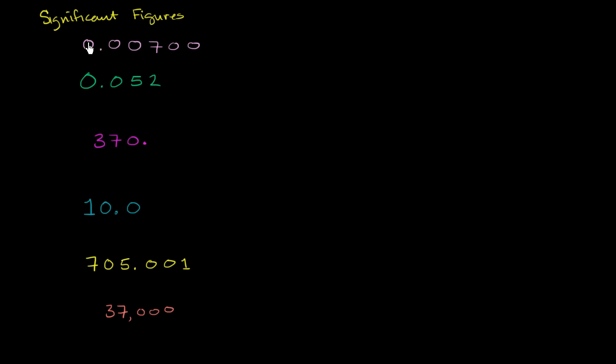The result isn't more precise than the things that you actually measure that you use to get that result. But before we go into the depths of it and how you use it with computation, let's just do a bunch of examples of identifying significant figures. Then we'll try to come up with some rules of thumb. The general way to think about it is which digits are really giving me information about how precise my measurement is.